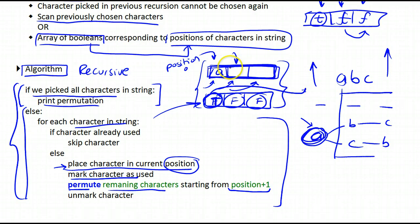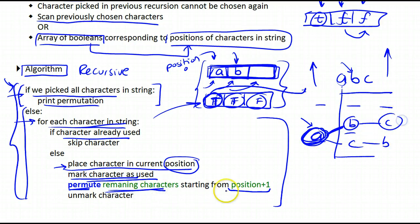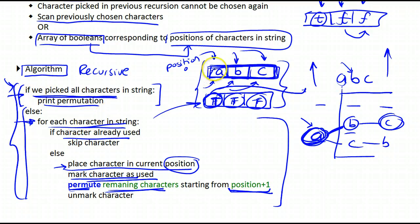Position plus one means the next slot in the buffer. This recursive call comes back here — we haven't picked all characters yet, so we go through the for loop again. A has already been used, so we move to B. B hasn't been used, so we place it, mark it as true. Now we have A and B set. We perform the permutation for the remaining character C starting from position plus one. Only C is left, so we place it, mark it as true, and call once more. Now we've picked all characters, so we print the buffer out.